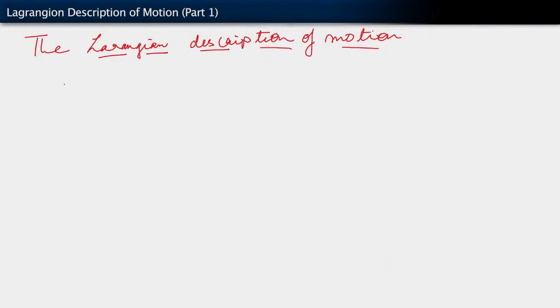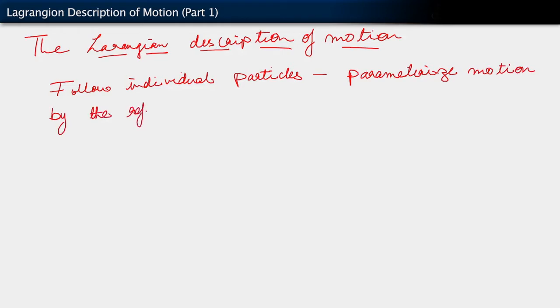We have the Lagrangian description of motion. What this means is we will follow individual particles. In particular, we will parametrize our motions by the reference position of a particle.